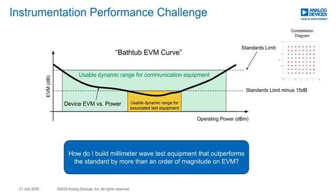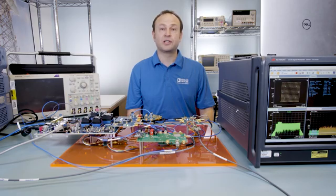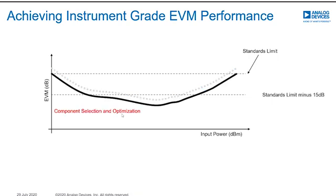The question we will answer today is: how do I build millimeter wave test equipment that outperforms the standard by more than an order of magnitude on EVM? I would like to demonstrate a circuit that can be used as a reference to build millimeter wave signal chains using the latest surface mount components from Analog Devices. In most cases, through component selection and optimization, the EVM can be improved by a good margin.